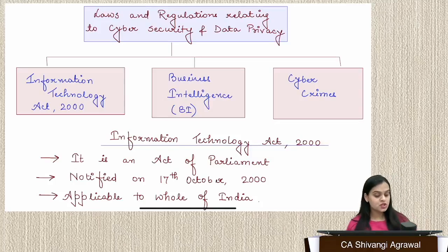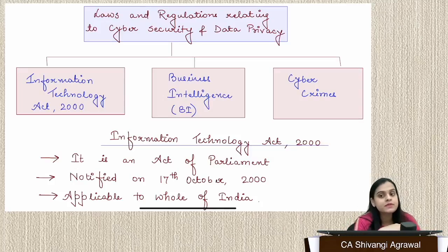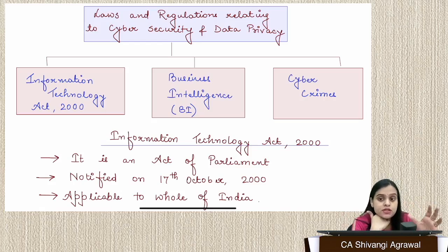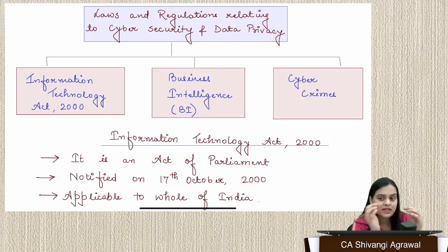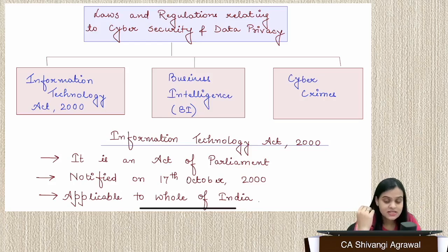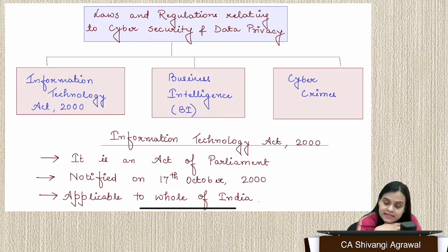Let's revise the chapter on cyber security — specifically laws and regulations relating to cyber security. This chapter is divided into three parts: first, the IT Act; second, business intelligence; and third, cyber crimes, which is related to the IT Act but given as a separate topic. Since we are just revising and not getting into intricate basics, we'll focus on core content required from an examination perspective.